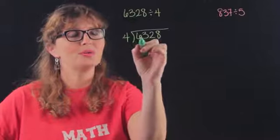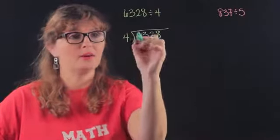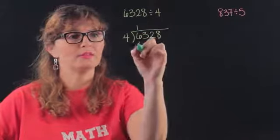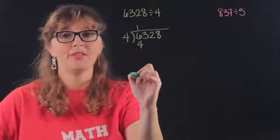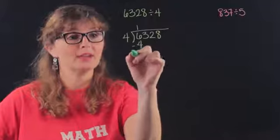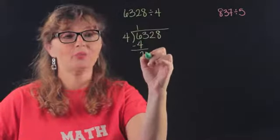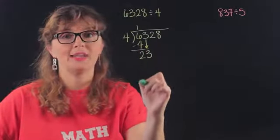So the four goes into six how many times, well once, and then we multiply one times four, we put it there. The next step is to subtract, six minus four is two, and then we bring down.